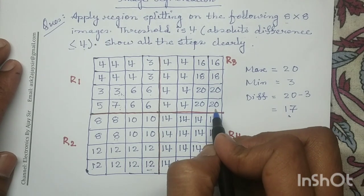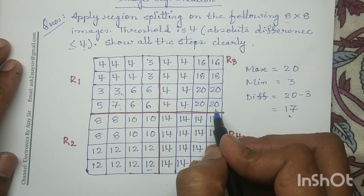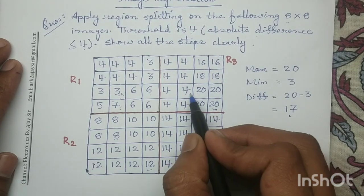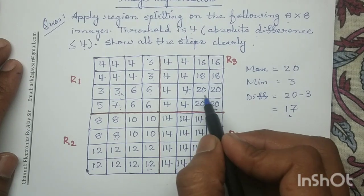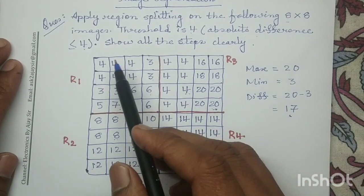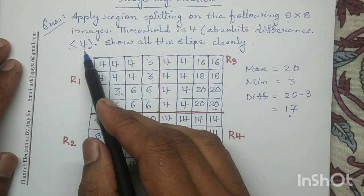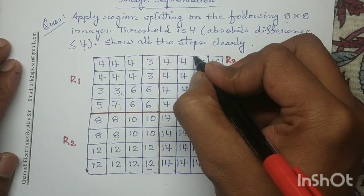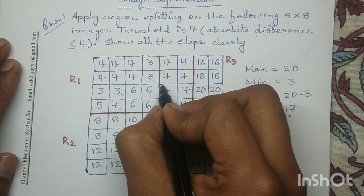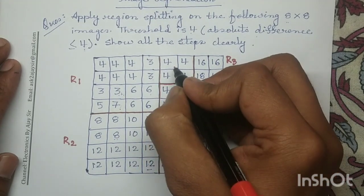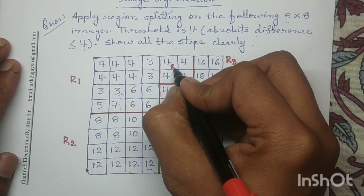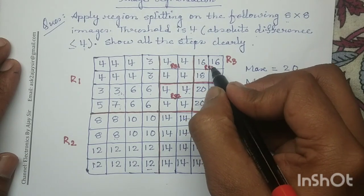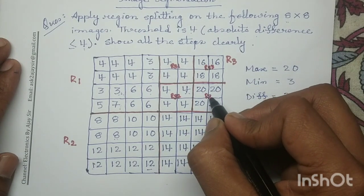Coming to region R3, the maximum value is 20 and the minimum value is 4. The difference 20 minus 4 is 16, and 16 is higher than 4, so we have to split region R3 into further 4 quadrants. We name them R31, R32, R33, and R34.